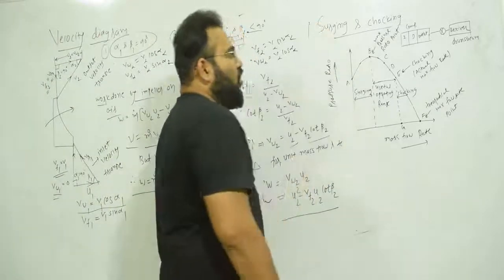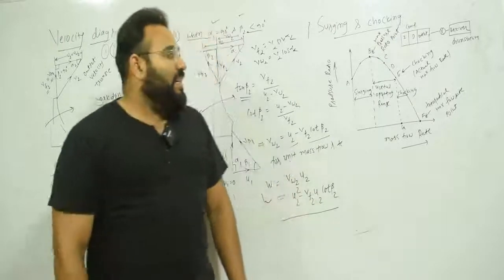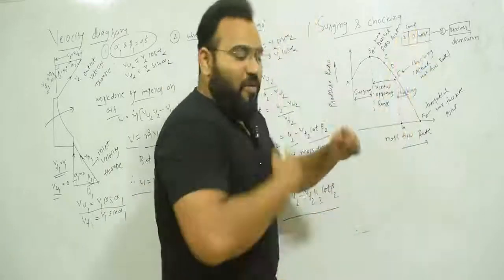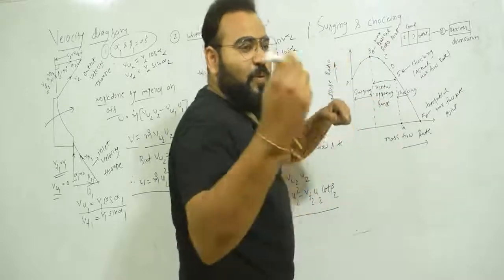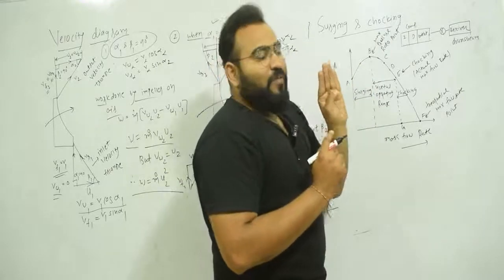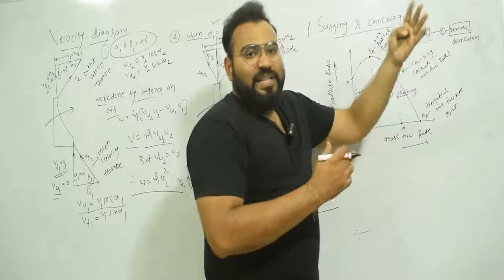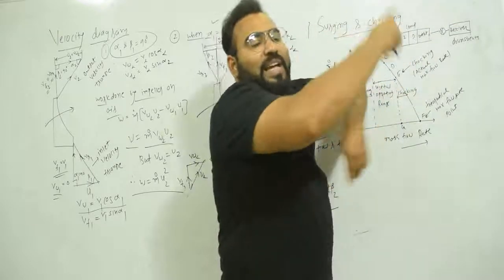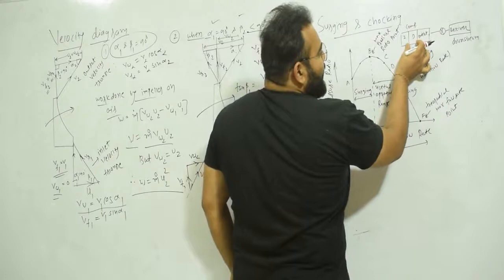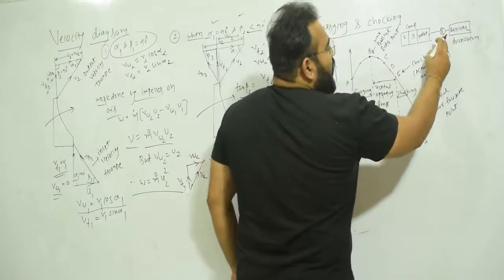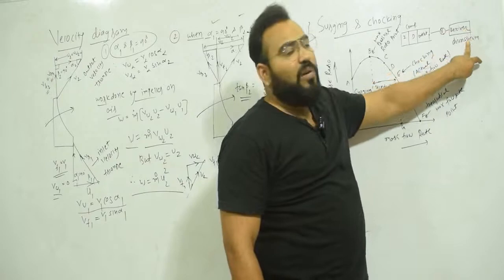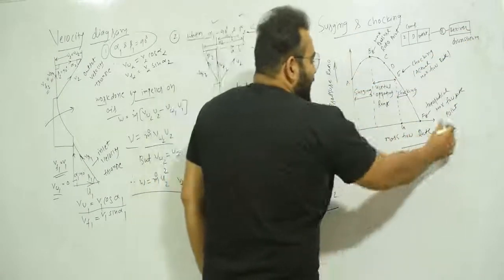Now let's see another topic: surging and choking in centrifugal compressors. In the compressor, the fluid enters the impeller, which provides kinetic energy and pressure energy. After the impeller, the fluid goes to the diffuser, which guides the fluid and increases pressure energy. Then it goes to the outer casing, delivery pipe, through a control valve, to the receiver — also known as the storage tank or downstream.